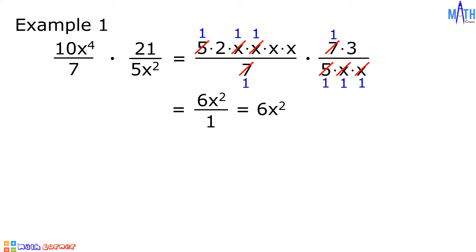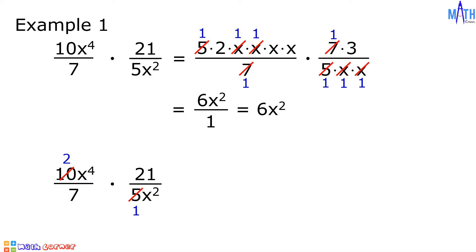Let us use another method. Again, we have 10x raised to 4 over 7, multiplied by 21 over 5x squared. Since 5 is a common factor between 10 and 5, 10 divided by 5 is equal to 2 and 5 divided by 5 is equal to 1. In x raised to 4 and x squared, x squared is a common factor. x raised to 4 divided by x squared is equal to x squared.